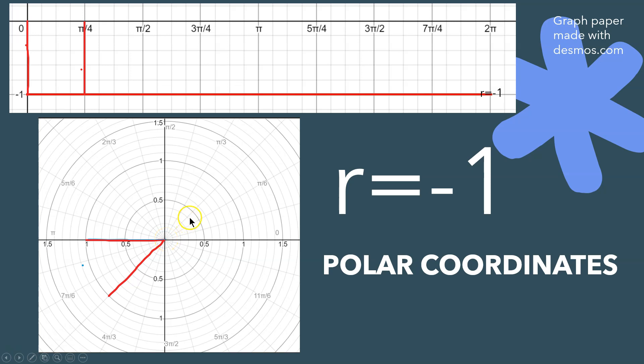Instead of going from here up to pi over 4, which would be in this direction, because r is negative, you're going to begin at the origin and go in the opposite direction this way.